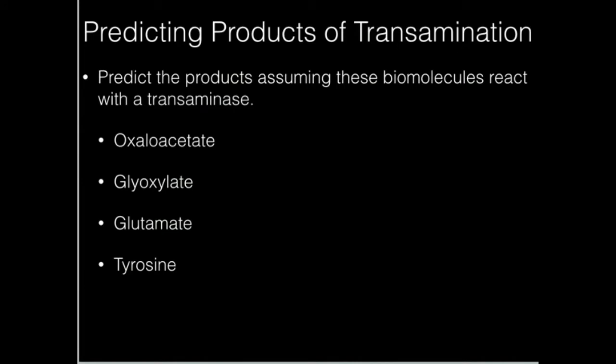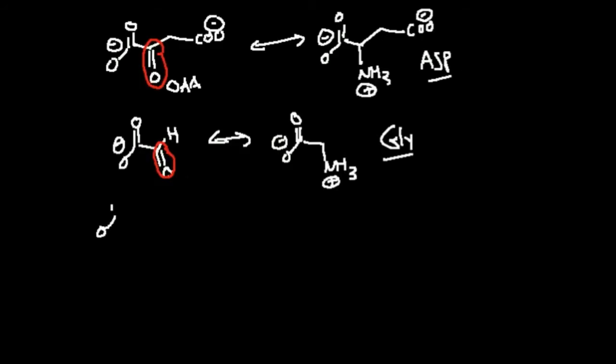What about glutamate? Let's draw glutamate. So glutamate looks like this. Now we're starting with an amino acid. We want to see what happens when we transaminate it.